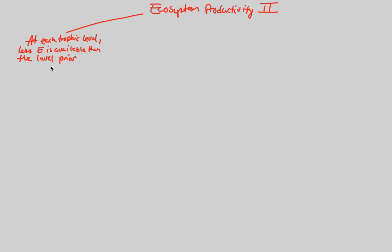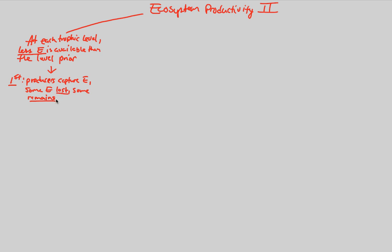What we mean by this is the following. If we move up a trophic level, we're going to get less and less energy. At the first trophic level, producers will capture energy from the sun. Some energy is going to be lost, and some remains — some utilized for respiration, and some stored within the tissues.